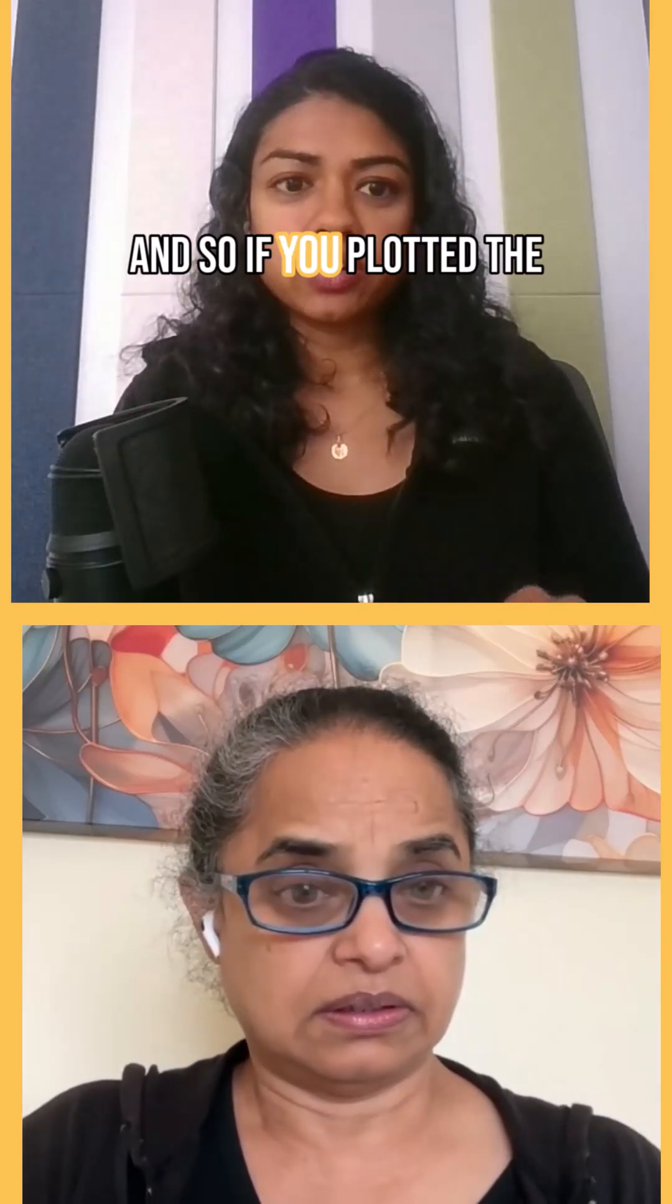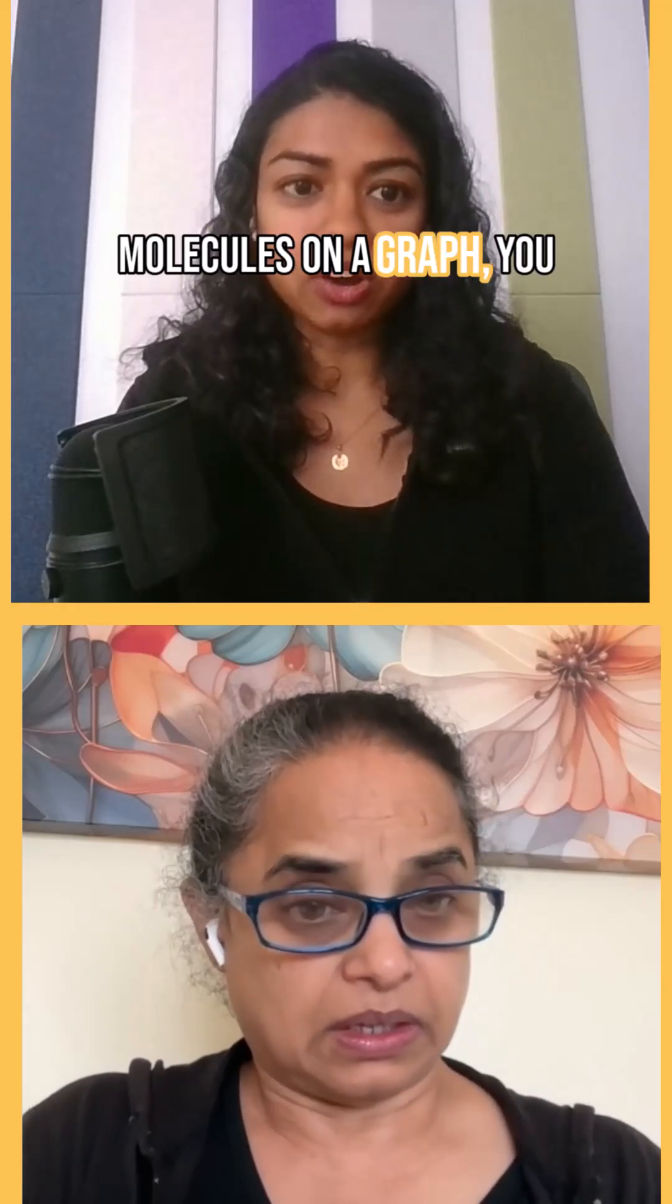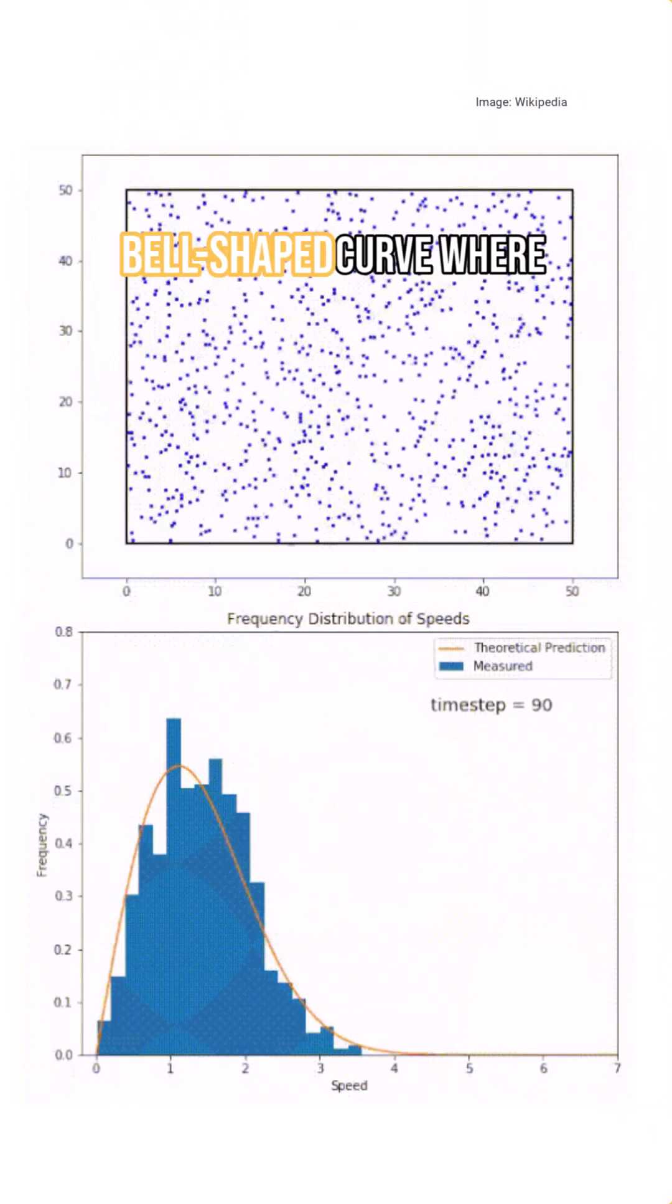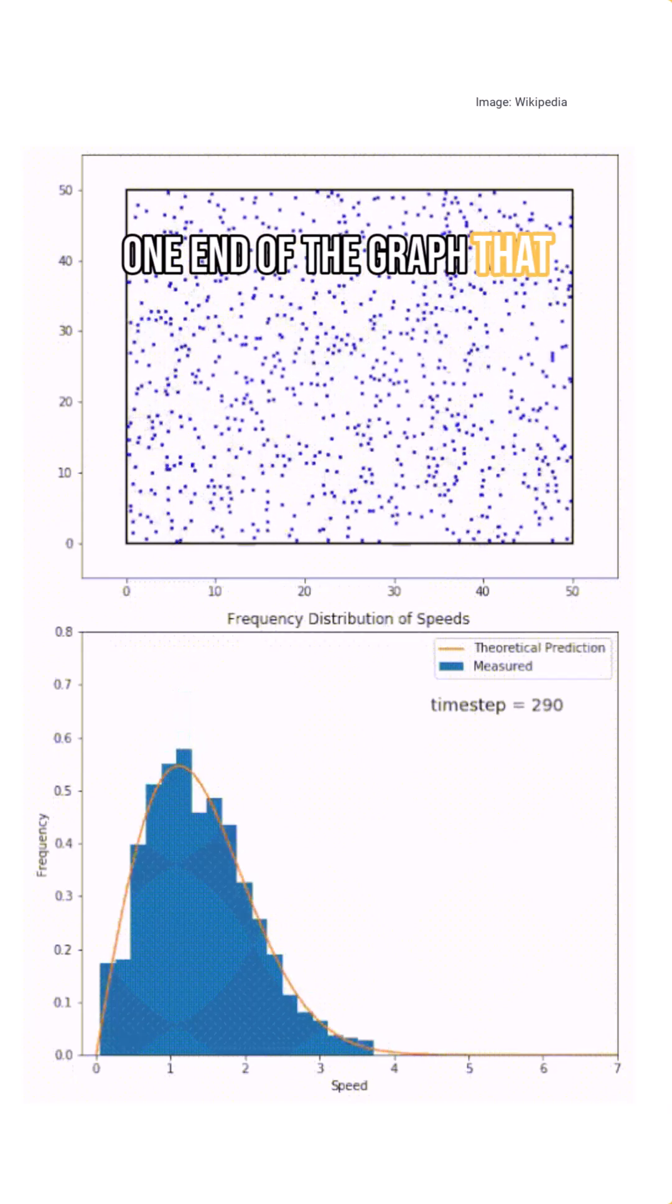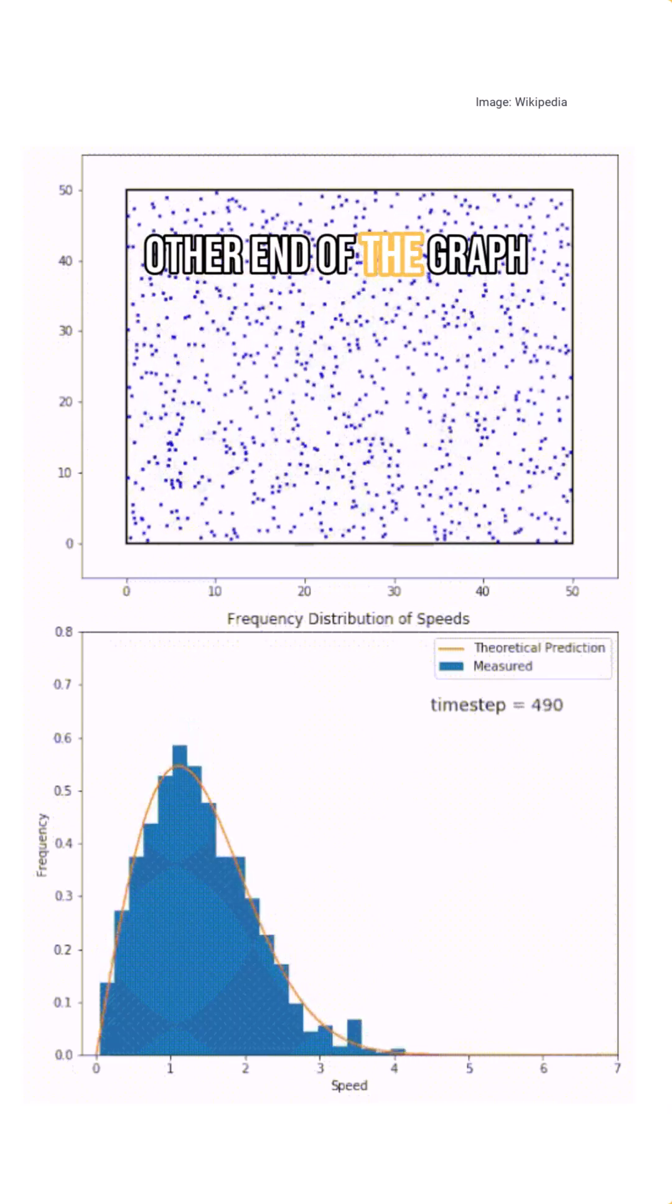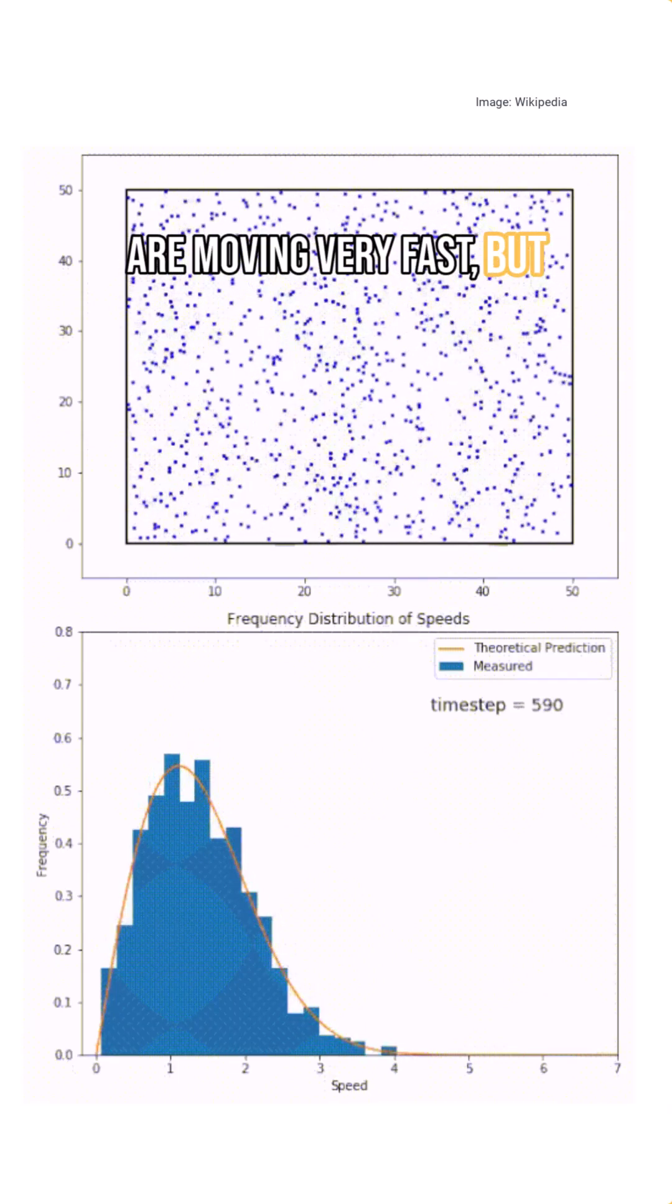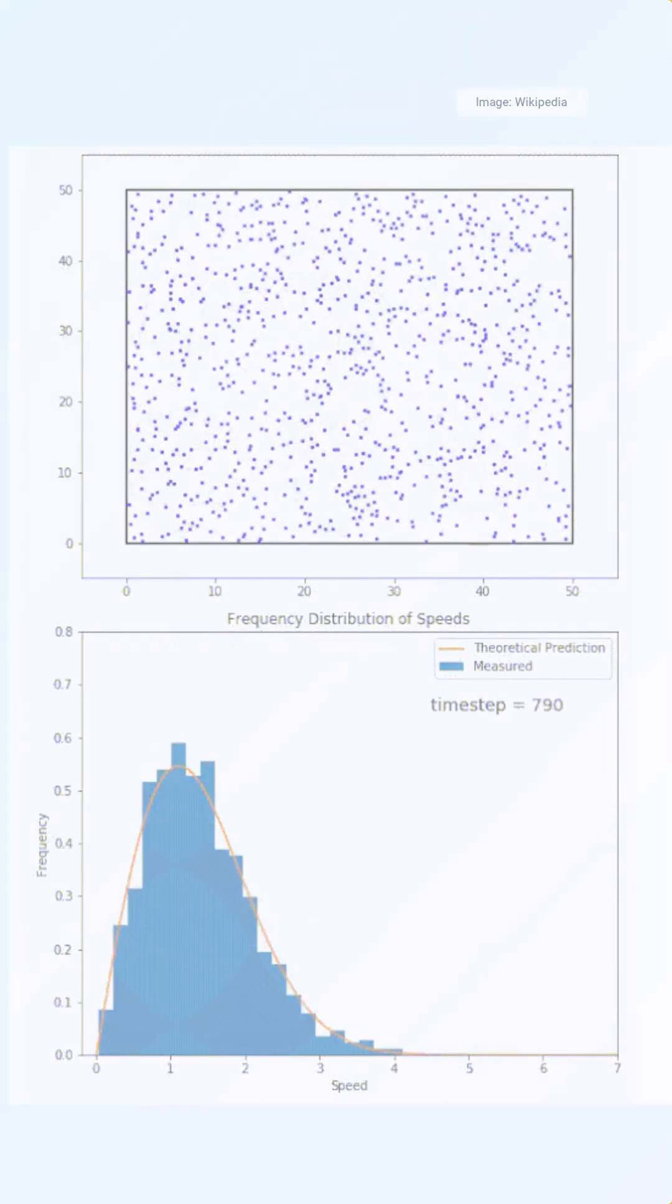And so if you plotted the speeds of all the molecules on a graph, you would get this kind of bell-shaped curve where a few molecules are on one end of the graph moving very slowly and a few molecules on the other end moving very fast. But the majority of the molecules fall somewhere in the middle.